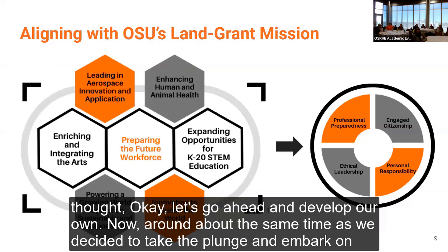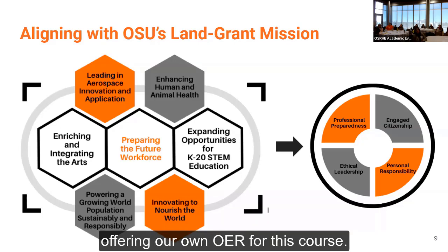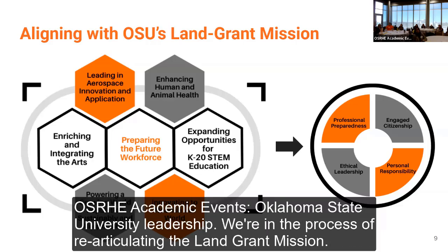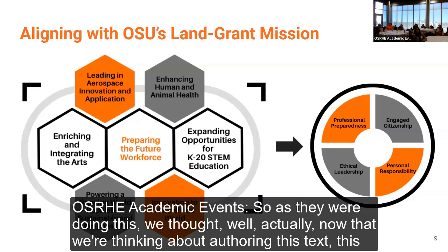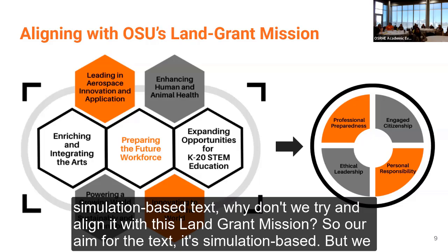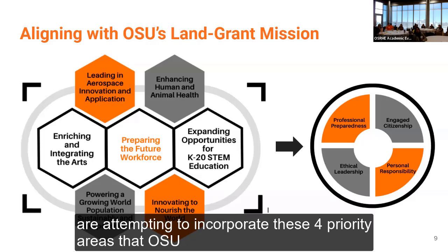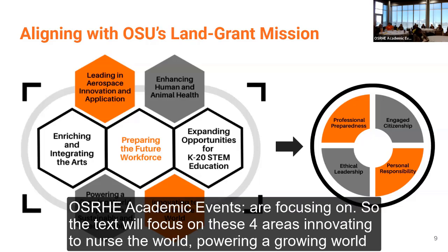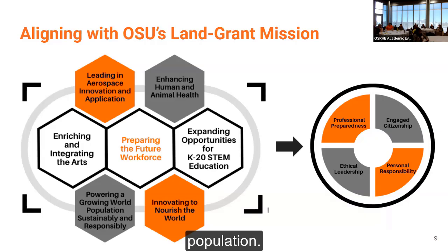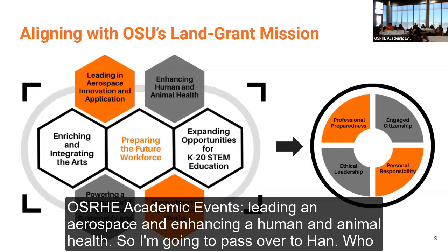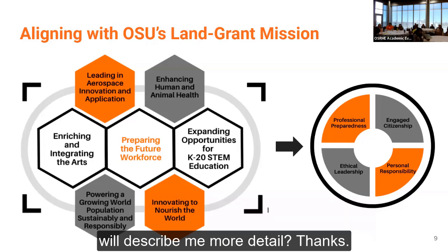Around about the same time as we decided to take the plunge and author our own OER for this course, Oklahoma State University leadership were in the process of re-articulating the land-grant mission. So we thought, now that we're thinking about authoring this simulation-based text, why don't we try to align it with this land-grant mission? Our aim is for the text to incorporate four priority areas OSU is focusing on: innovating to nourish the world, powering a growing world population, leading in aerospace, and enhancing human and animal health.